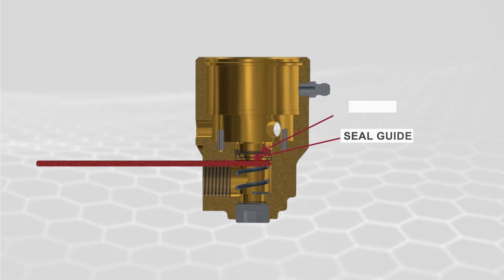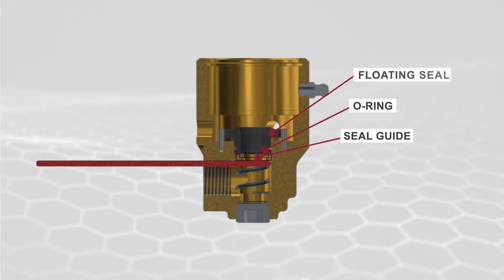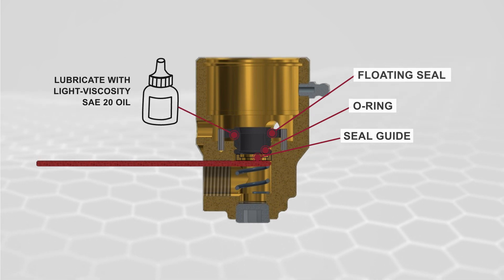Insert the seal guide, then grease and insert the O-Ring. Install new floating seal after cleaning the seal face and lubricate it with light viscosity, SAE 20 oil.